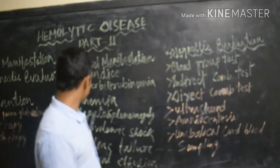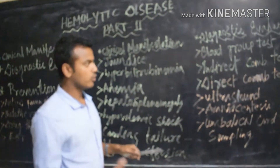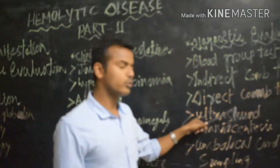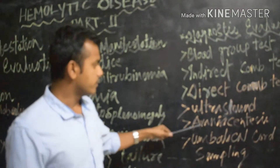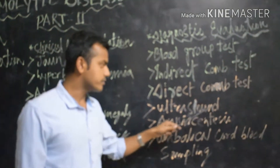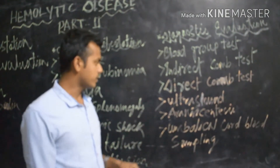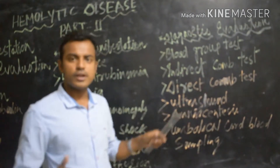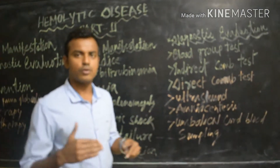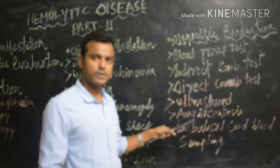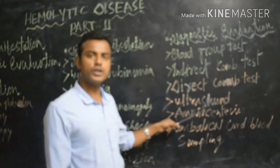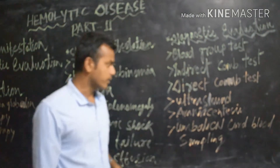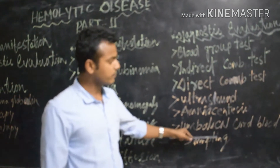By ultrasound, we can determine if there is hepatosplenomegaly or any enlargement of organs. Amniocentesis is a test done to check whether bilirubin is present in the amniotic fluid or not, so we can identify the bilirubin level in amniotic fluid.